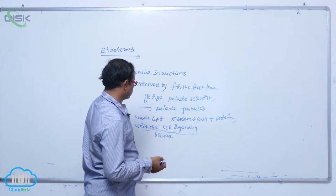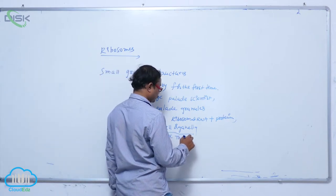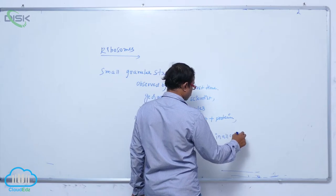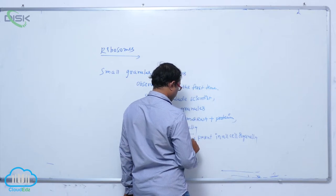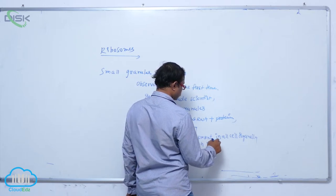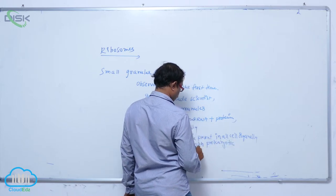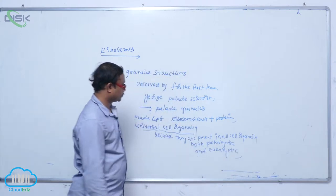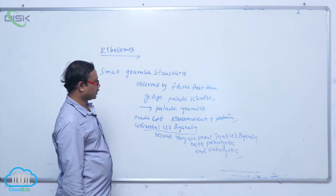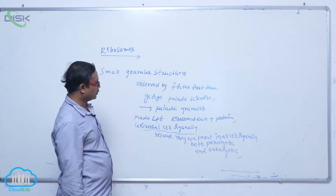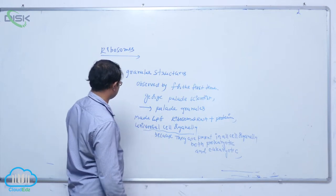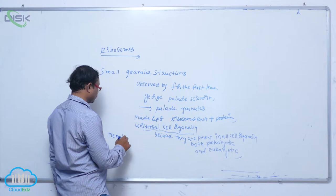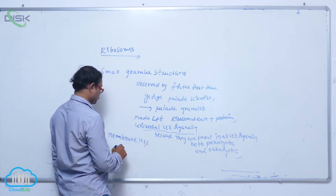Ribosomes are present in all cell organelles, both prokaryotic and eukaryotic. These ribosomes are spherical-shaped structures. They do not have a covering membrane, so they are described as membrane-less cell organelles.